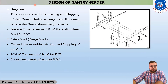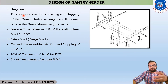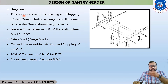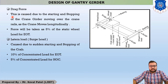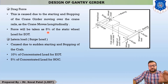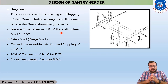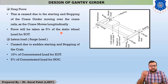The third load is drag force, also called braking force. Whenever you transfer your heavy load from one place to another place, you apply braking. Drag force is caused due to starting and stopping of the crane girder moving along the crane rails. This load is considered as 5% of the static wheel load. Static wheel load means your maximum wheel load, which is calculated in step number one — that step is discussed later in this lecture.